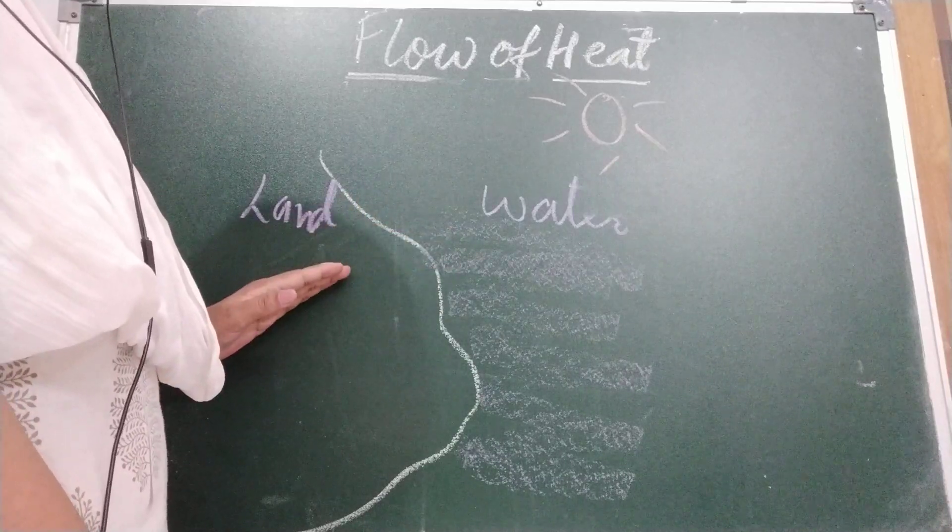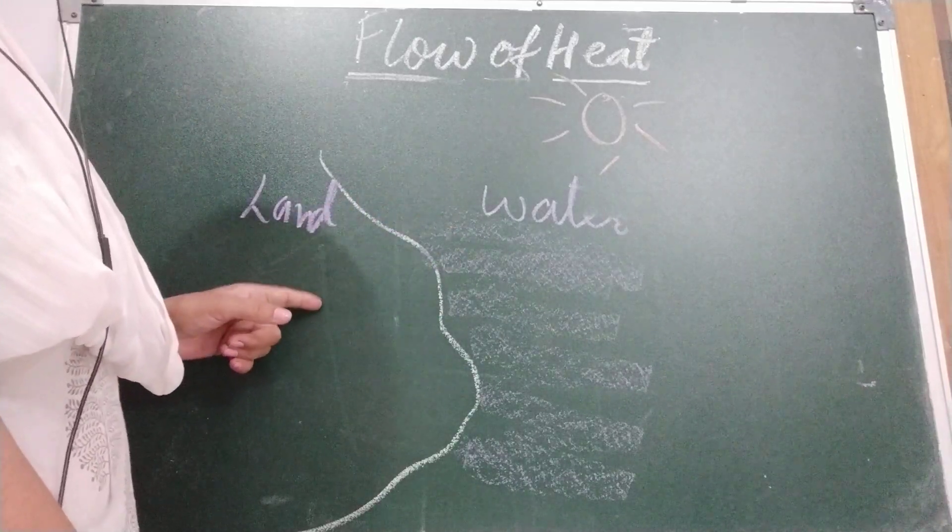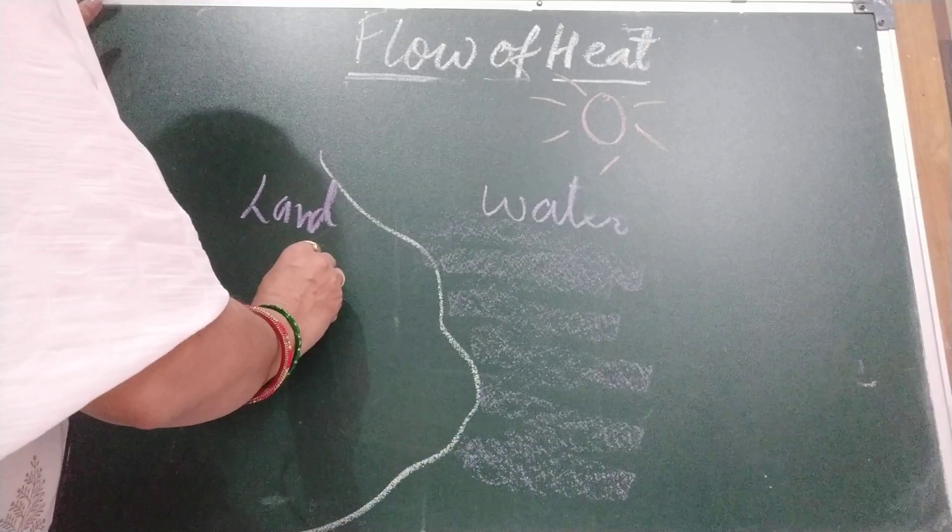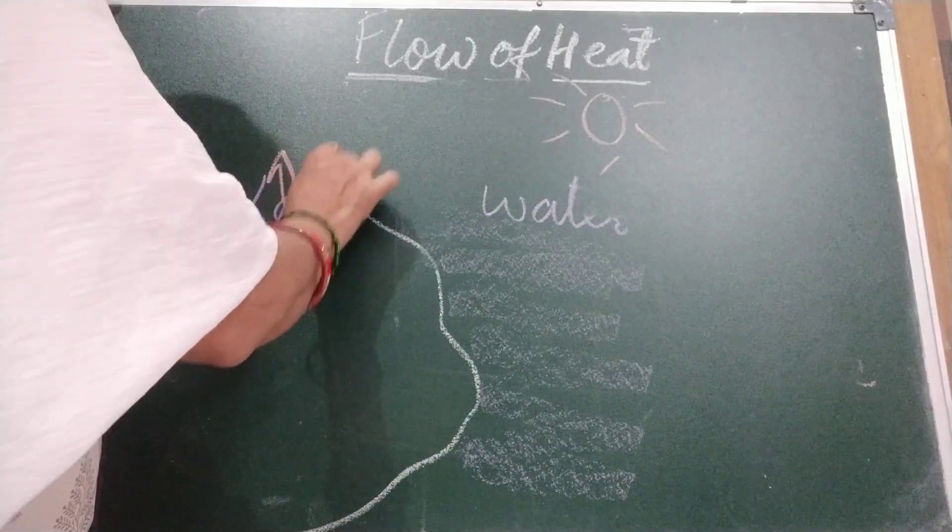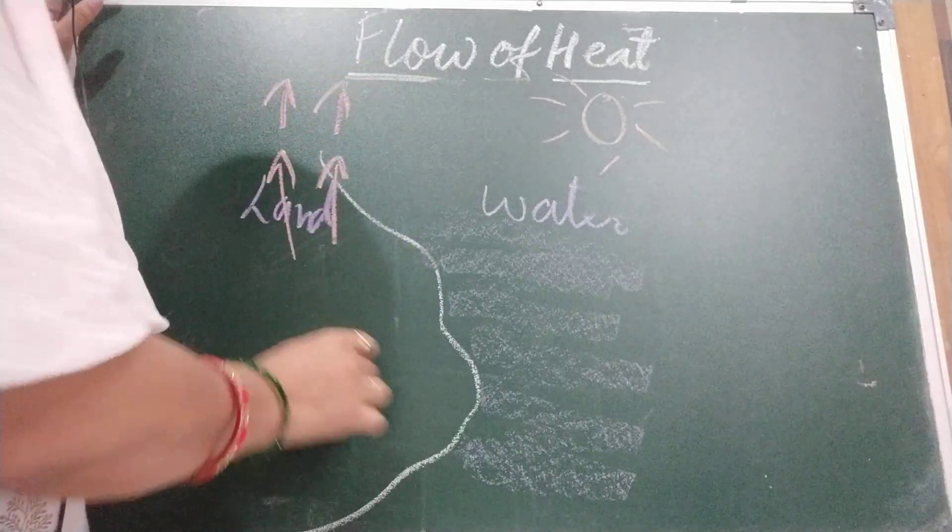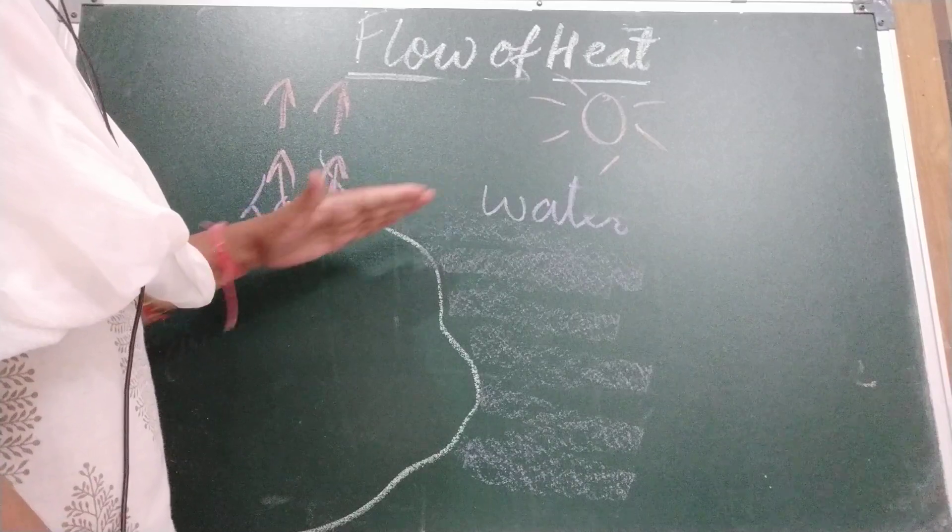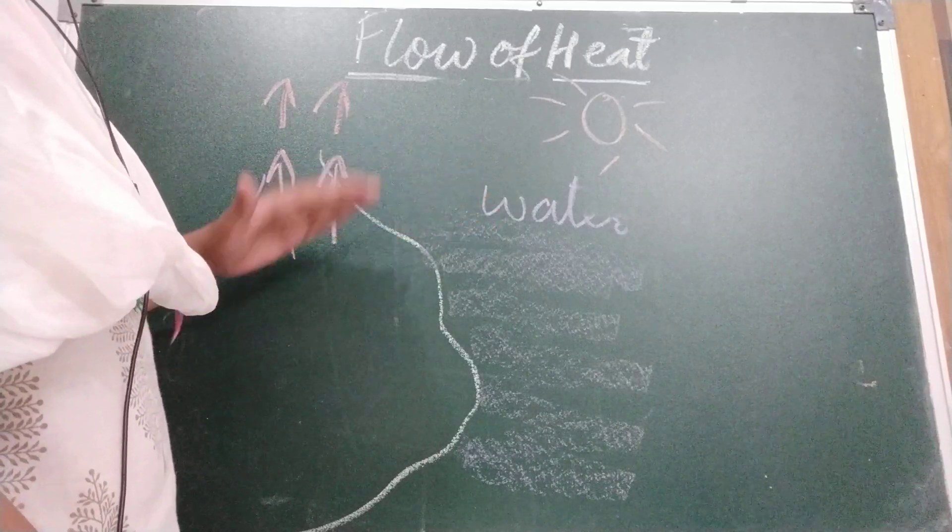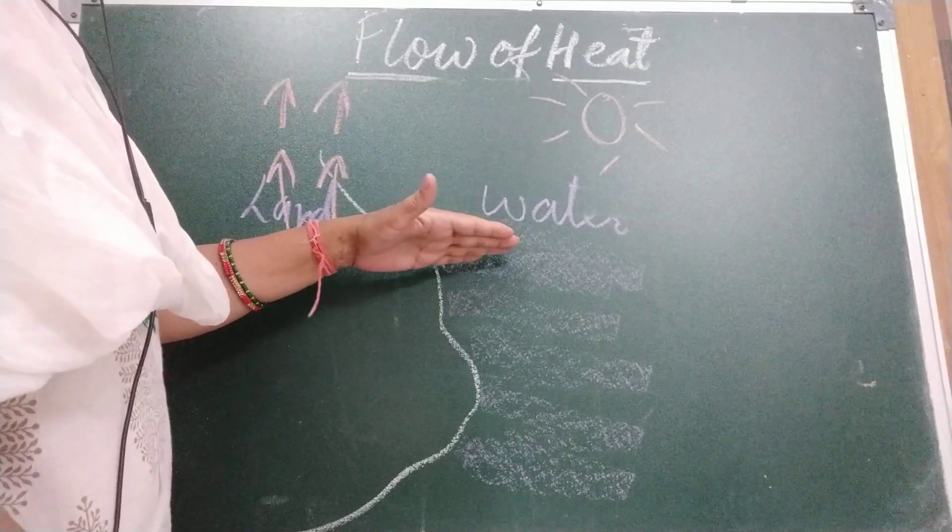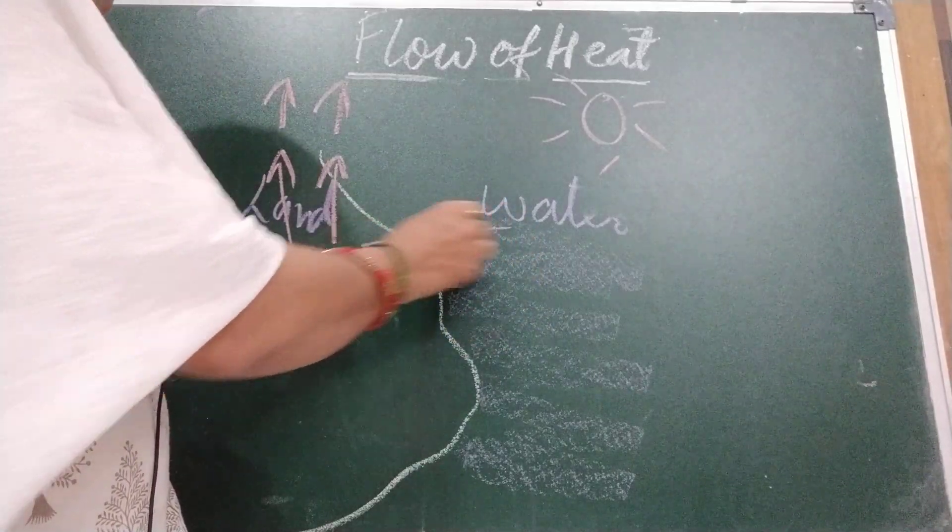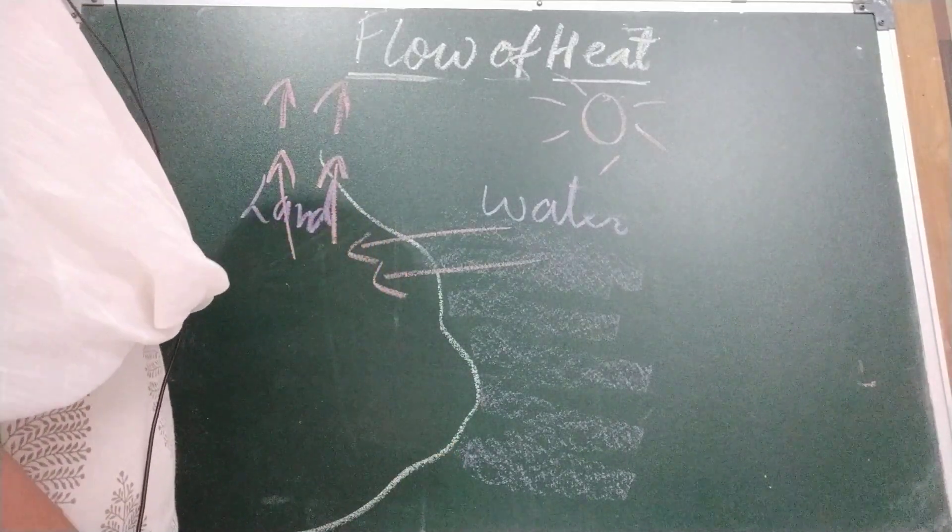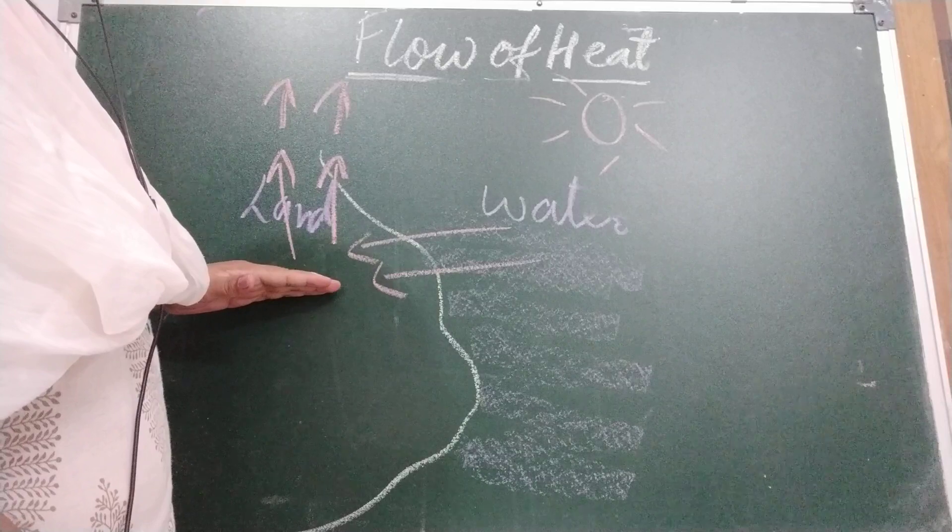If we compare, this is hotter than water. The air above the land becomes hotter and lighter and rises up. So the air here is hot and light, it rises up. So the place is created here. This hot and light air rises up. The air above the sea, which is cooler and heavier, it rushes and takes the place created by hot rising air.